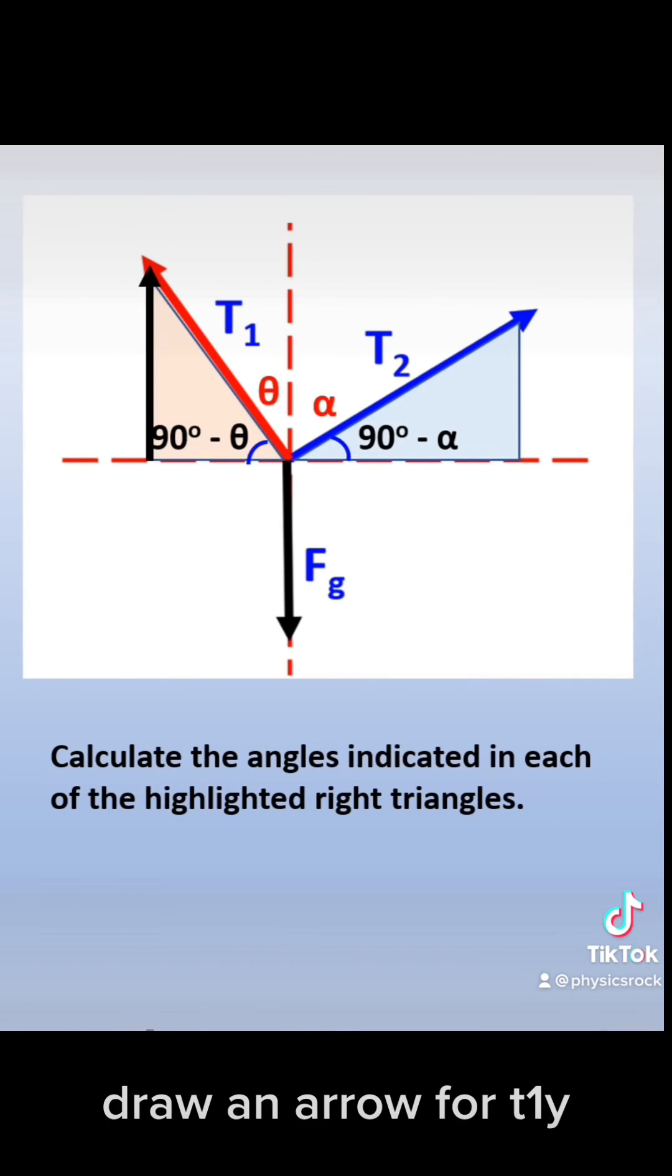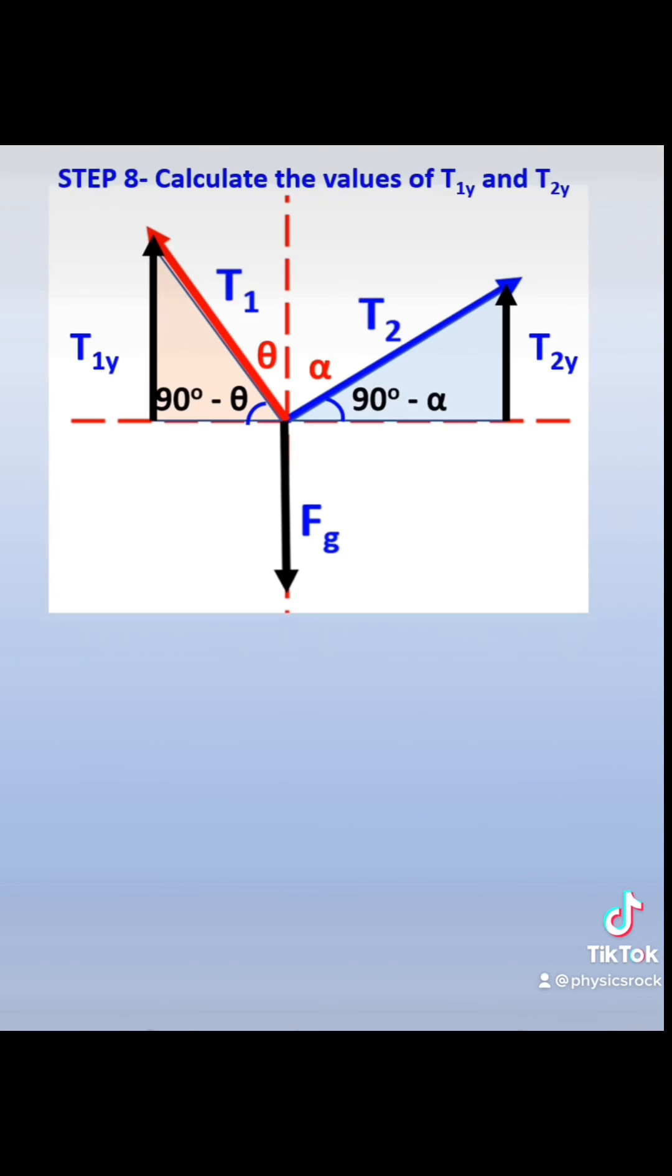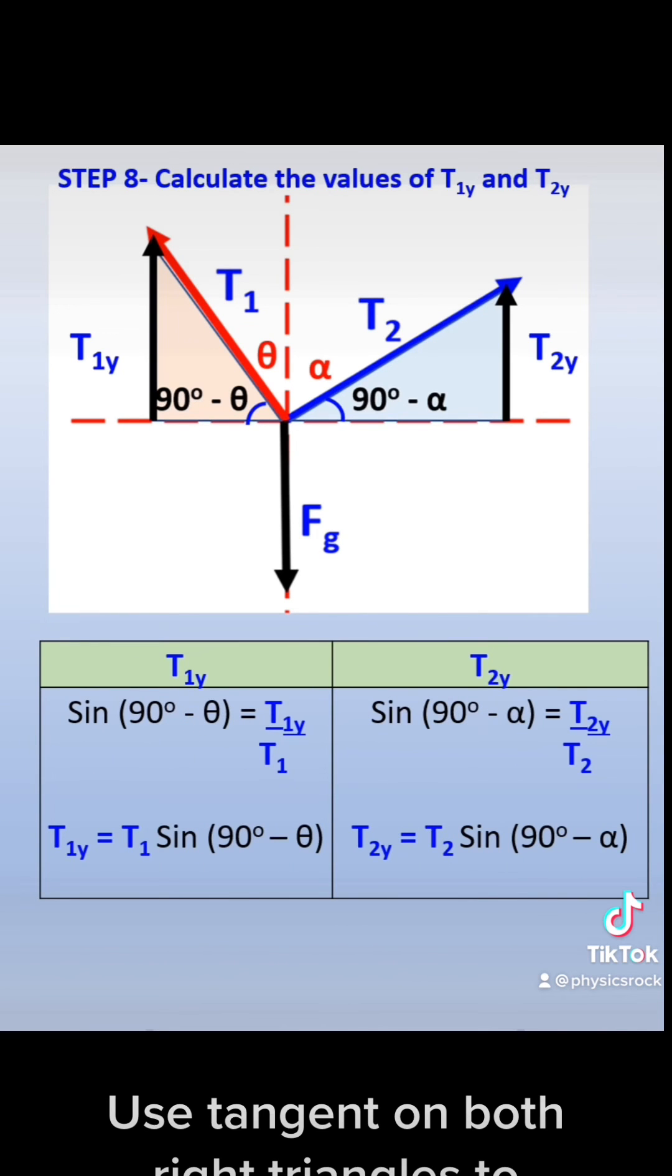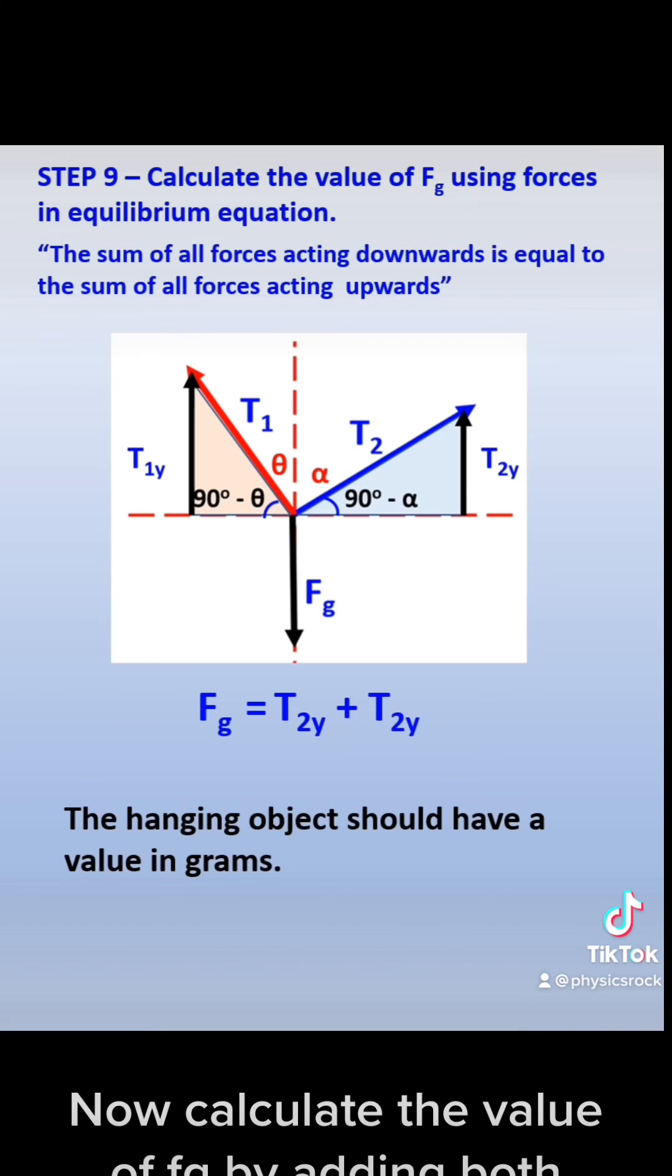Draw an arrow for T1Y. Draw an arrow for T2Y. Use tangent on both right triangles to calculate the vertical components T1Y and T2Y. Now calculate the value of FG by adding both vertical components.